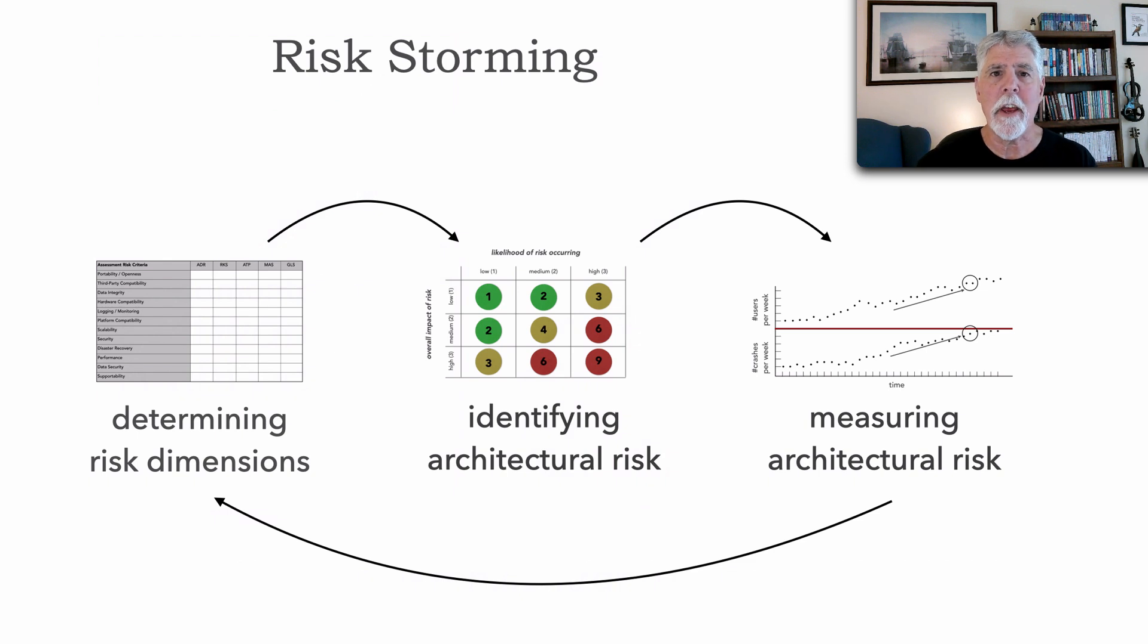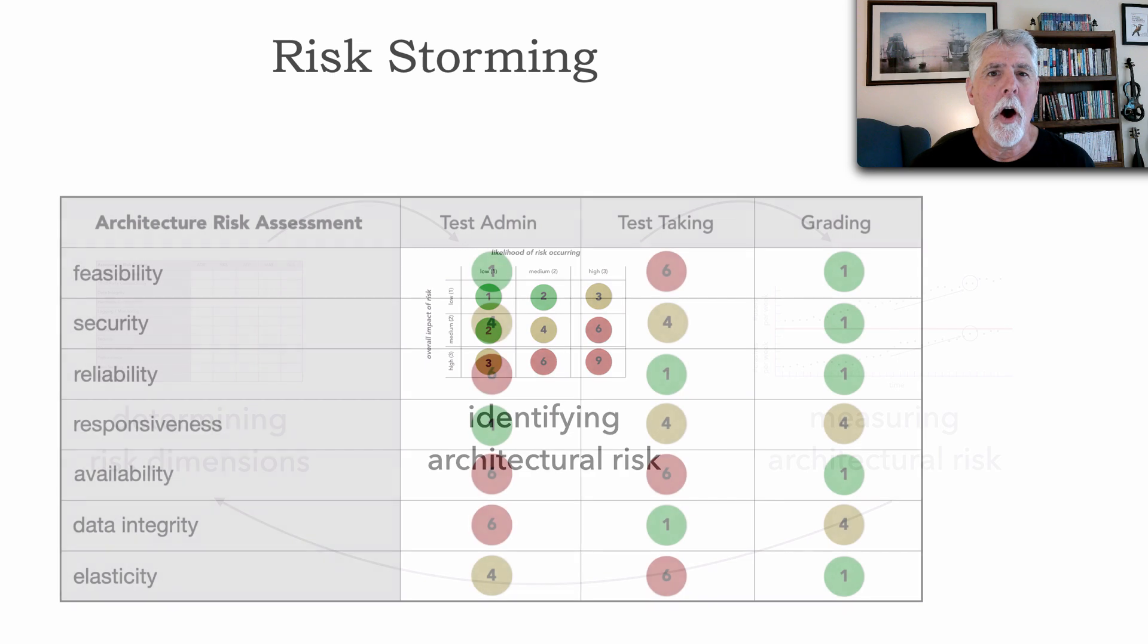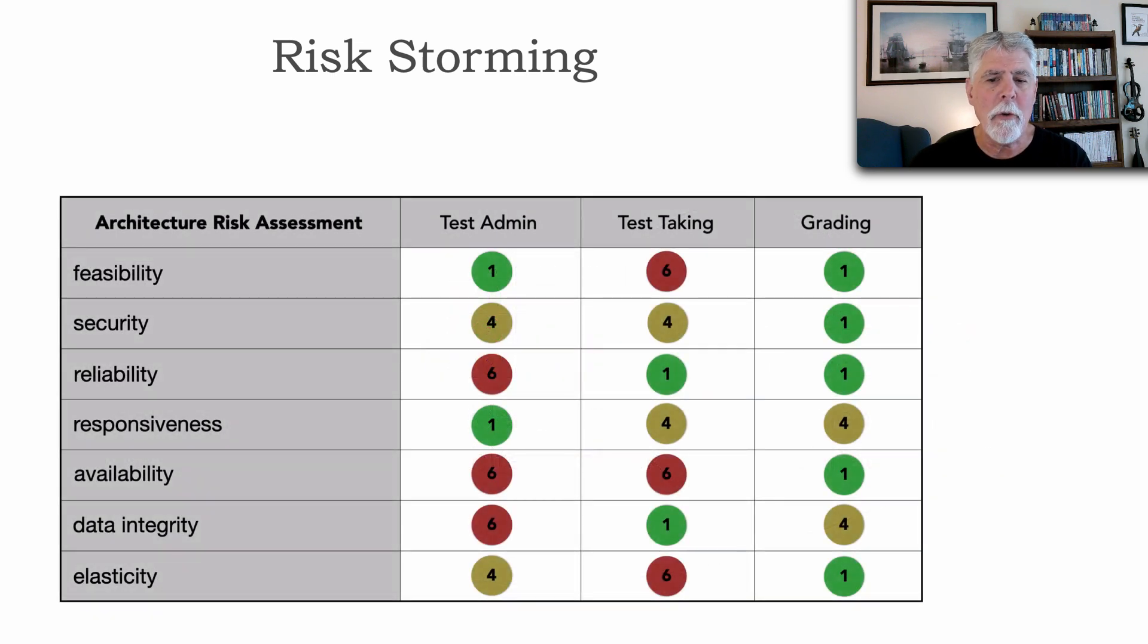When we take a look at assessing or identifying risk within an architecture, the context of risk storming really falls into the identification of that risk. Recalling back to lesson 128, what we did in that lesson was we saw how to assign risk to various areas of a system based on criteria, specifically architectural characteristics. But I posed the question in lesson 128,